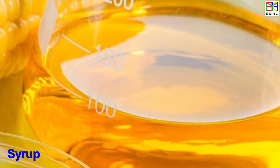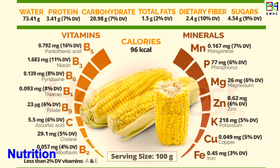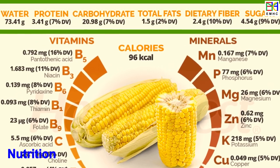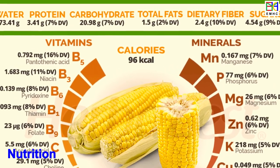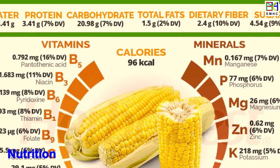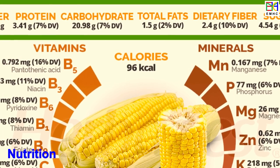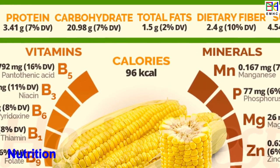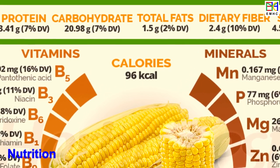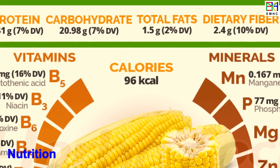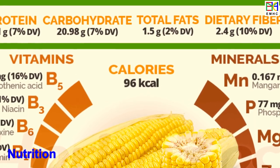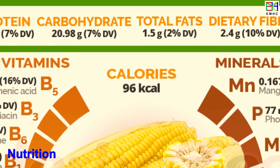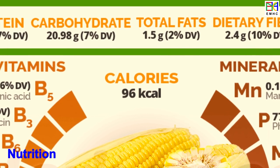Corn is a good source of carbohydrates, dietary fiber, and many essential vitamins, minerals, and antioxidants. Corn also contains a moderate amount of protein and is low in fat. Fresh corn is typically higher in nutrients than canned or processed corn.